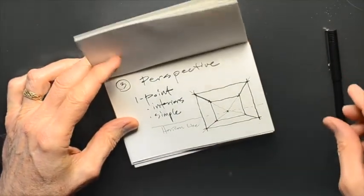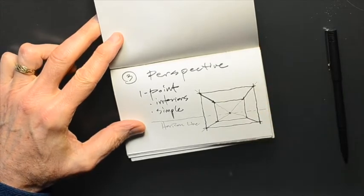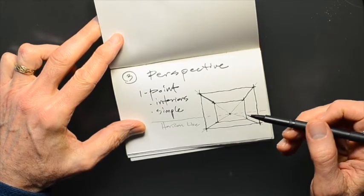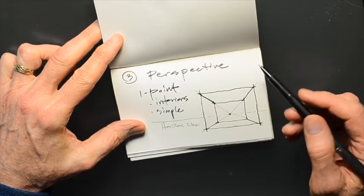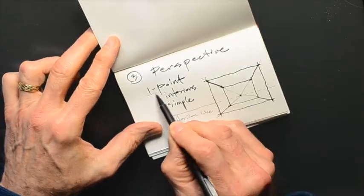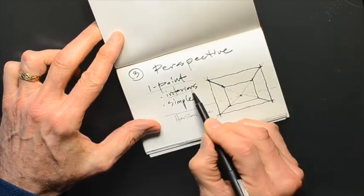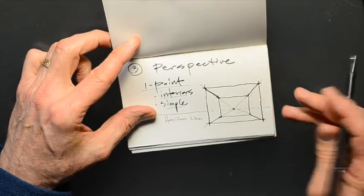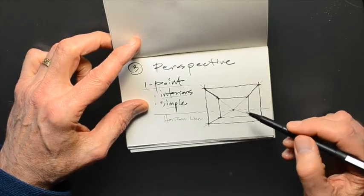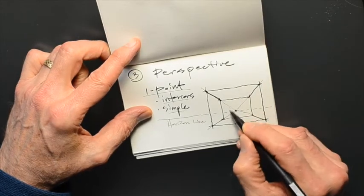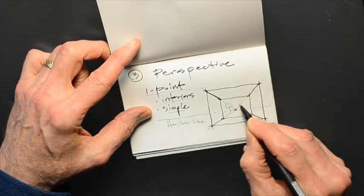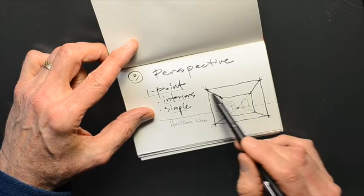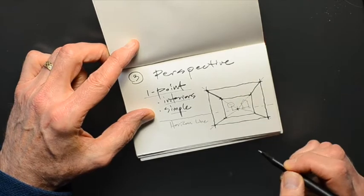The next thing I'd like to talk about is perspective — a way to get some three-dimensionality to your drawing. It's key to understand there are a couple of different types of perspective. The simplest is called one-point perspective, often used for interiors. What I've done here is drawn a little box, as if you could see something beyond it on the horizon — and I've shown you what's called a vanishing point.